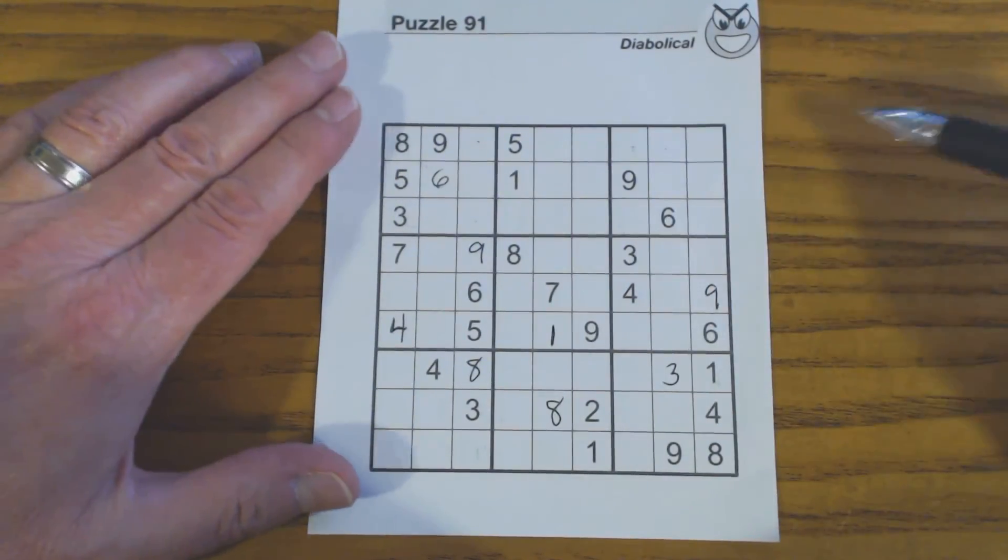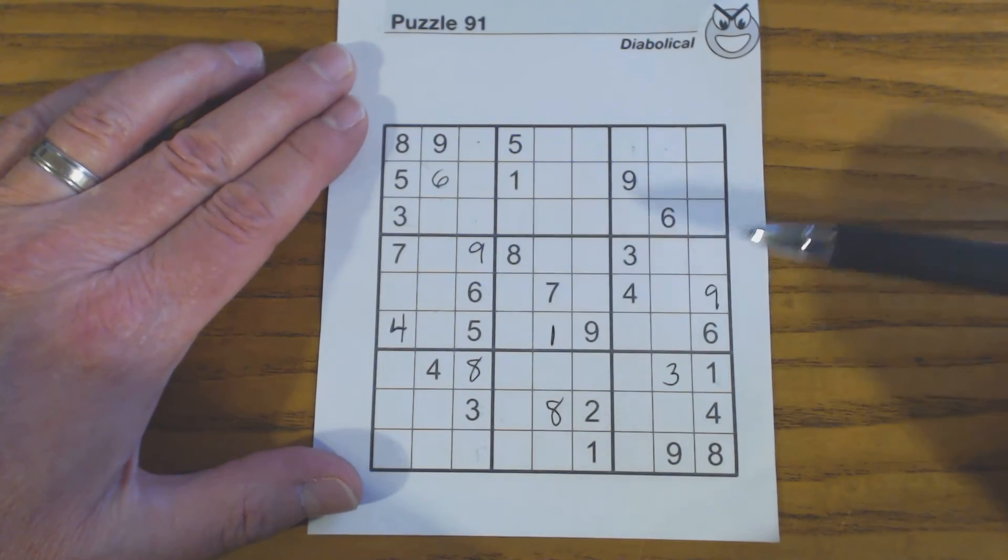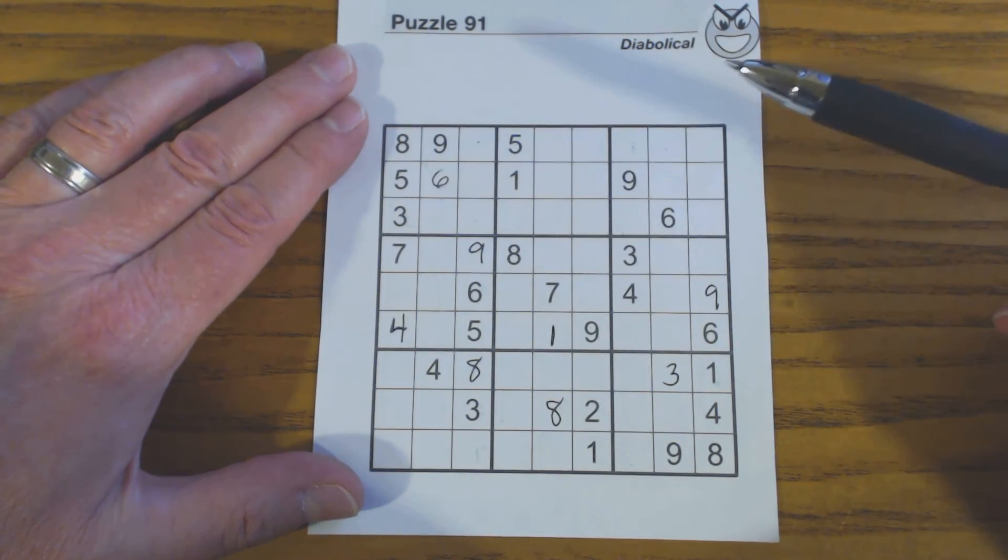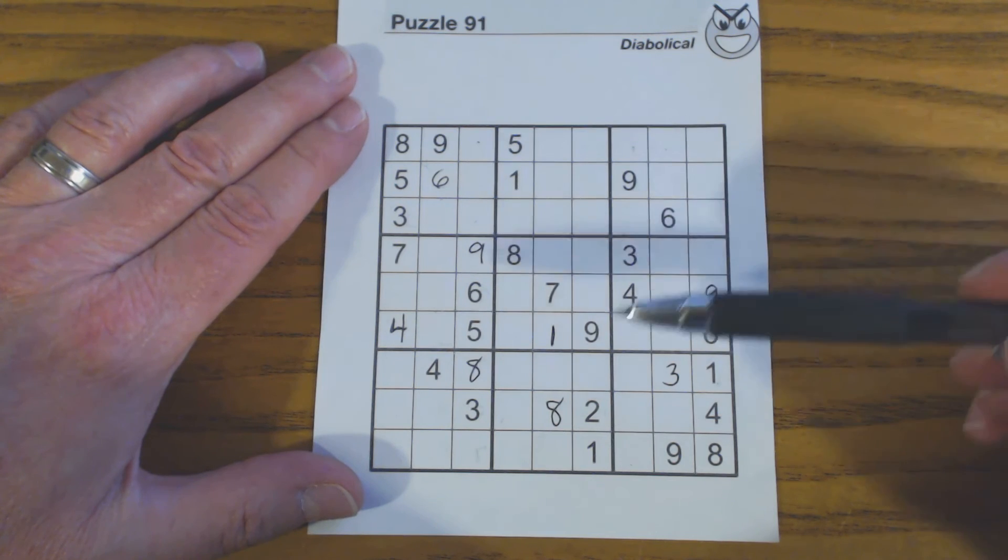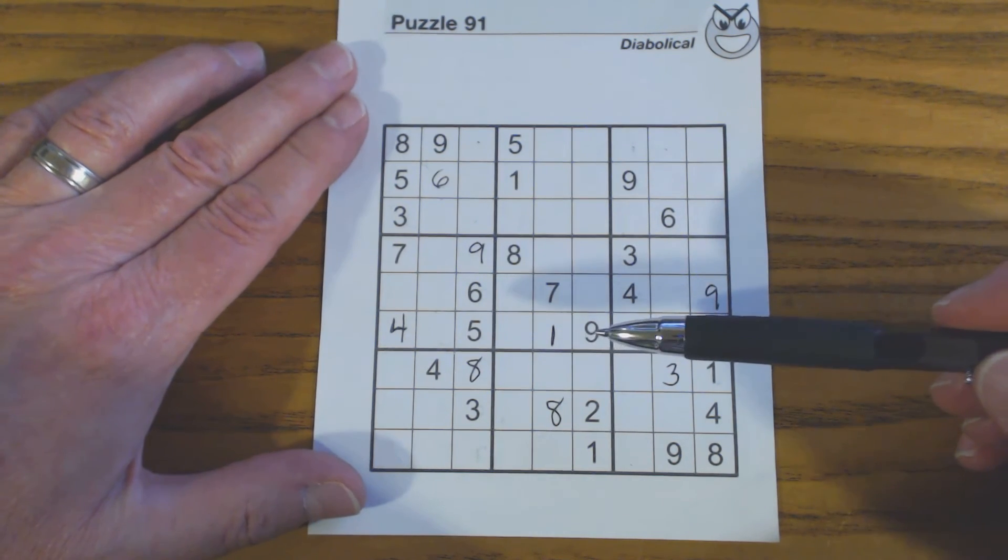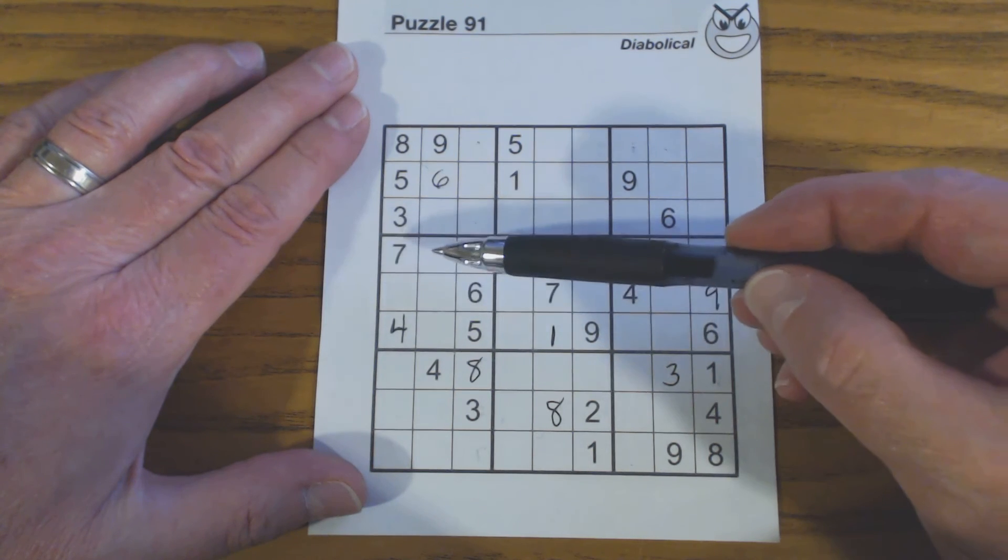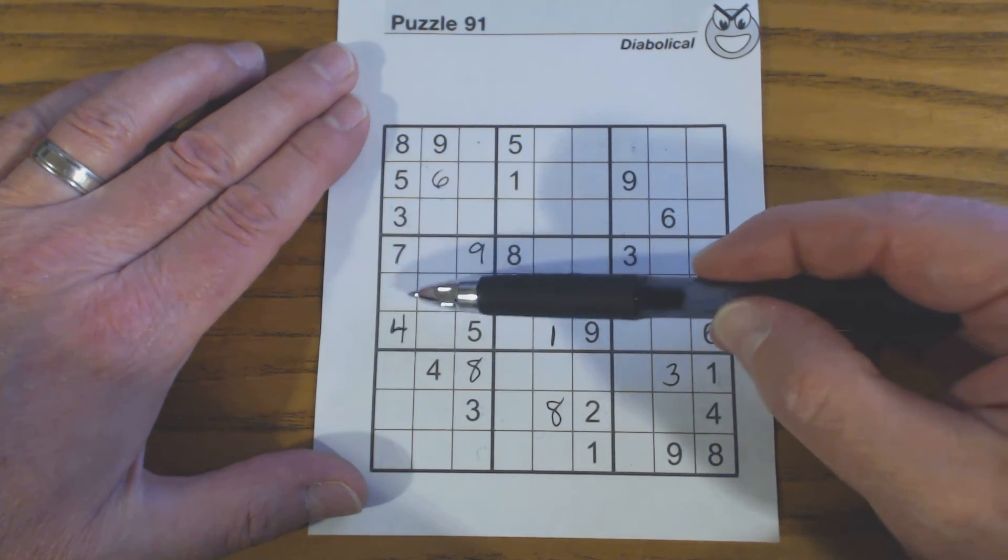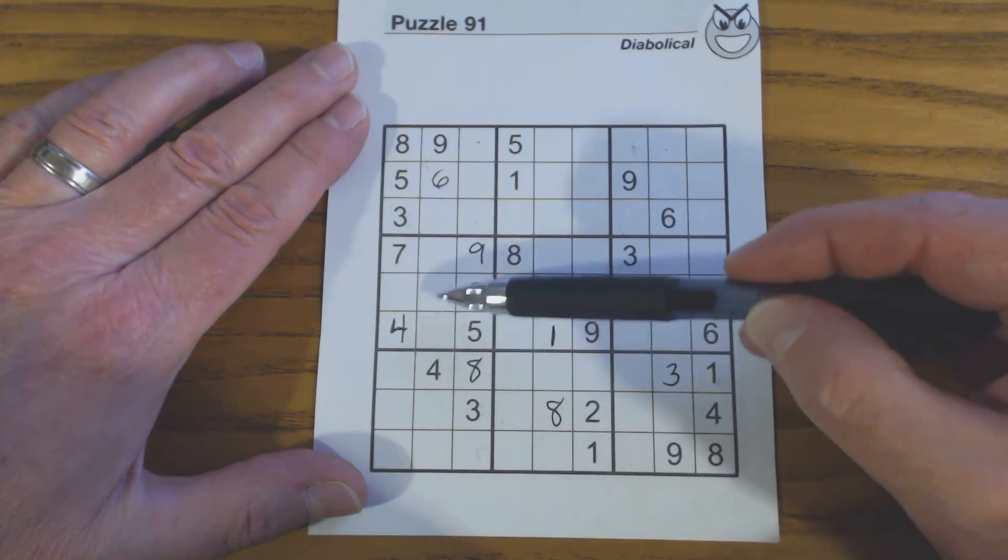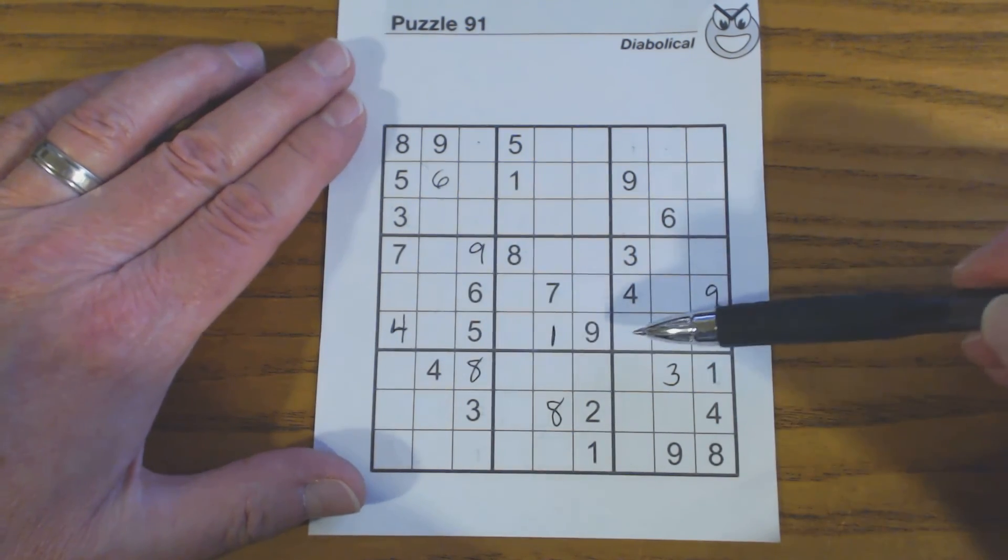That was quite involved in order to find this 1, but on these more difficult puzzles, and in this case this is a diabolical, which is the hardest puzzle in this book. To find this 1, we had to find twins here, 2, 3, 2, 3. And twins here, 1, 2. And then we found these twins because of these, 3, 8.